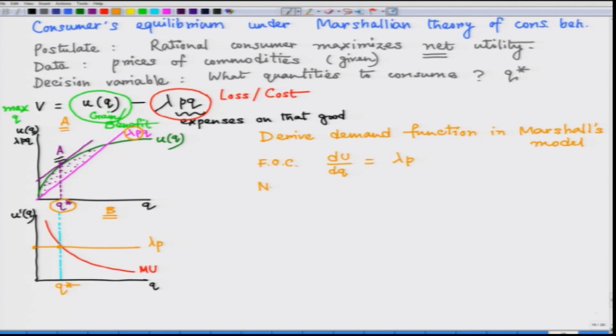The negative slope of demand function is derived from the second order condition.